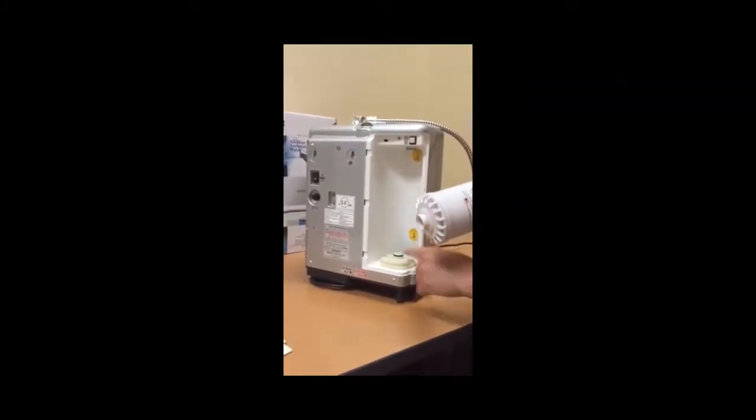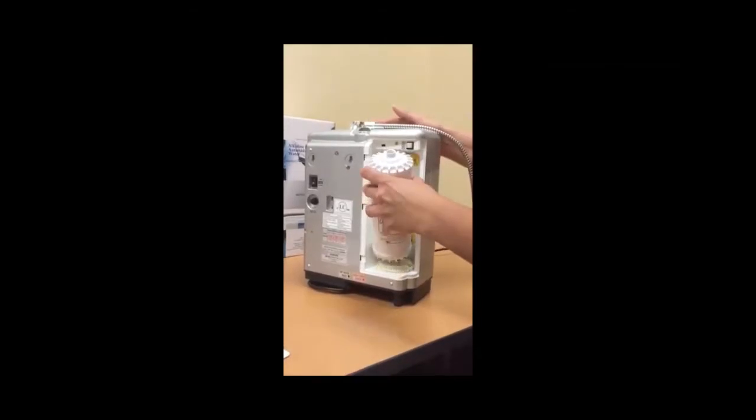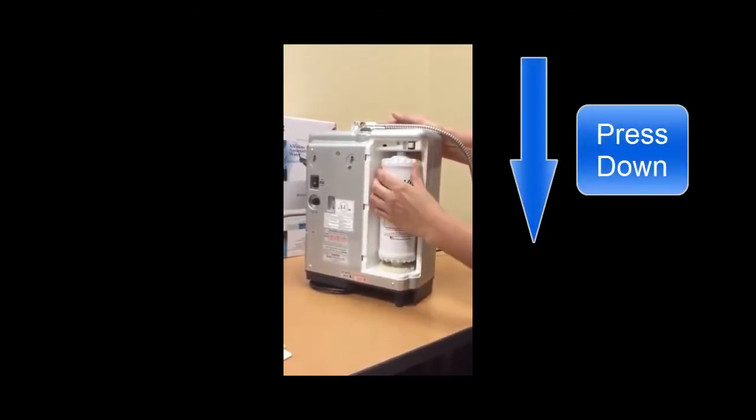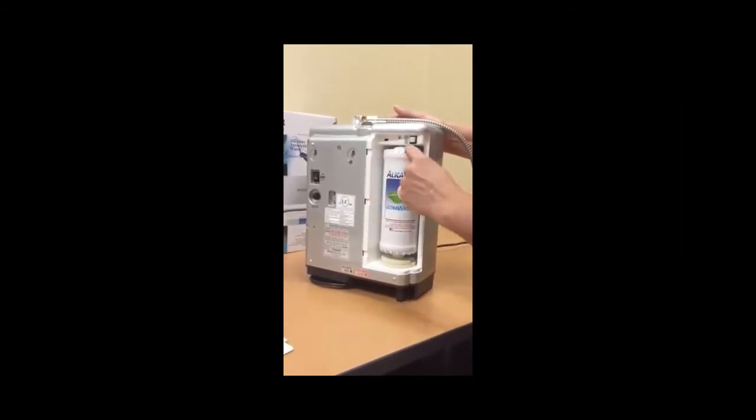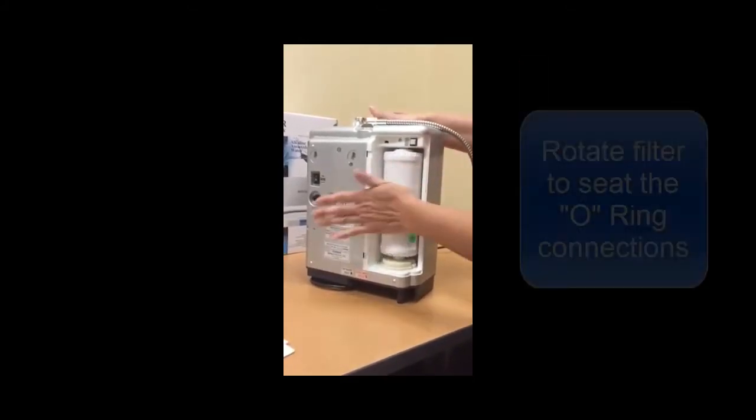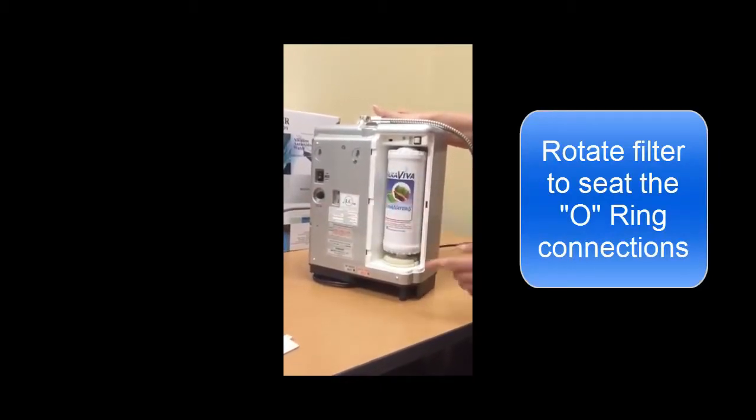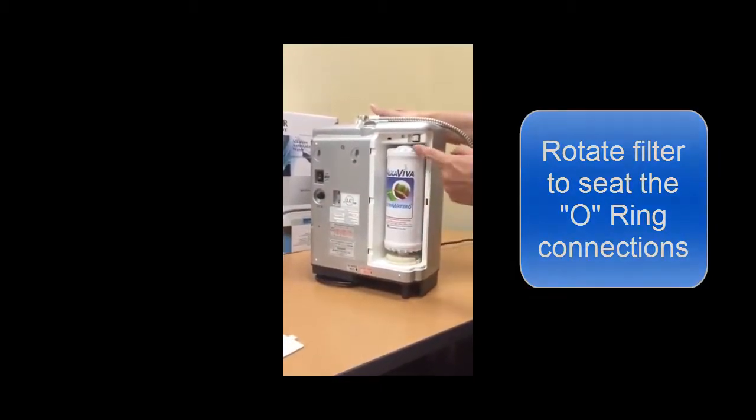Match the bottom of the filter with the filter cushion, press down, angle the filter in and match the top of the filter with the connection at the top. Rotate the filter back and forth several times to seat the O-ring connections at the bottom and the top.